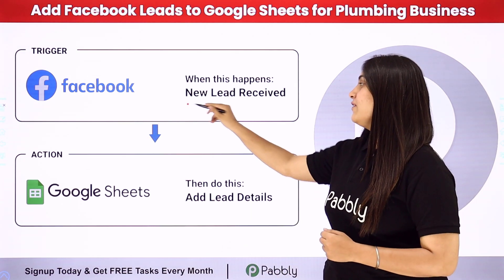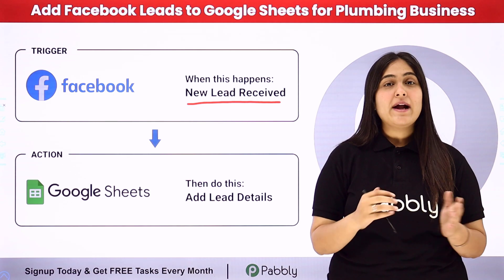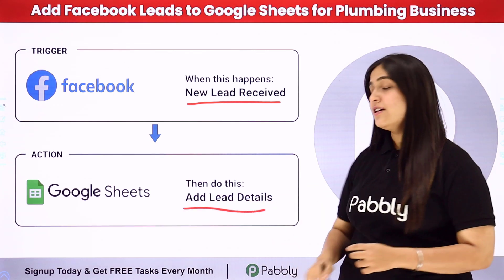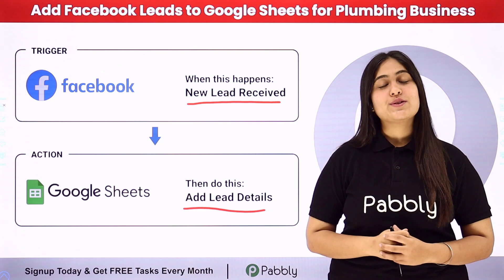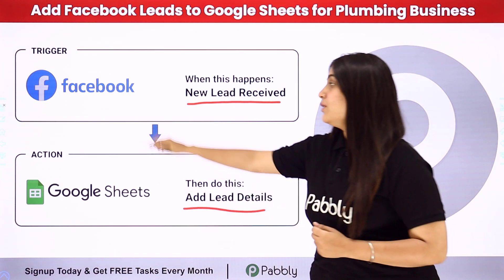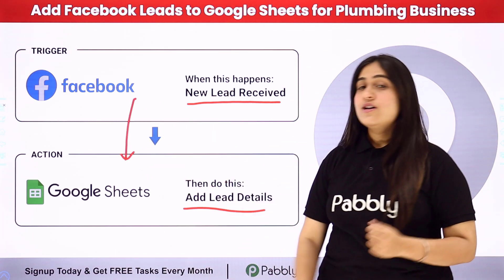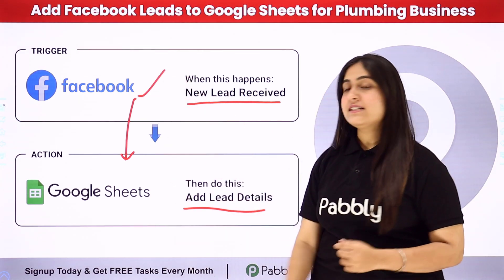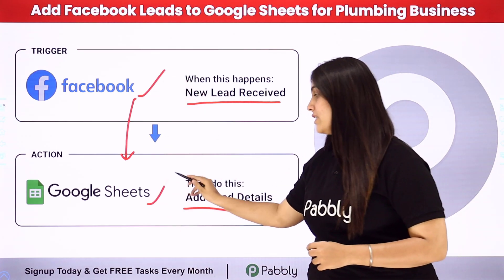In this case, I want whenever a new lead is received, automatically the details of that lead should be added in my Google Sheets. To automate this process, we will use an automation software named Pabbly Connect, in which we need to connect a trigger and an action. Our trigger application will be Facebook Lead Ads and our action application will be Google Sheets.